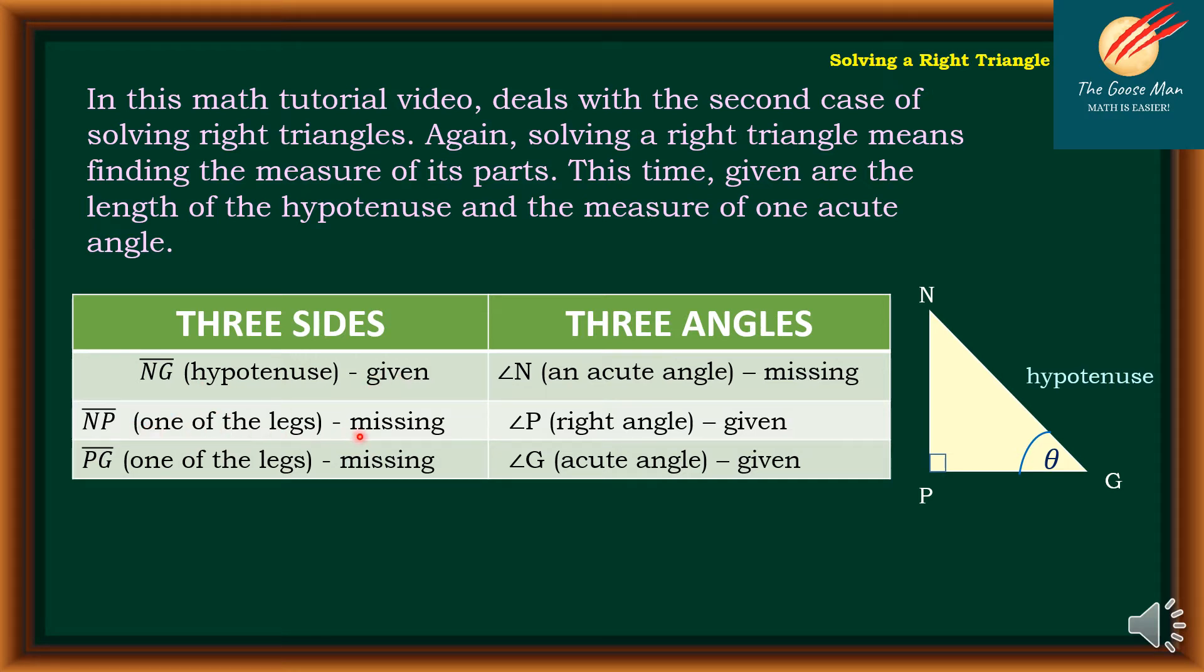However, NP is the missing side. PG, one of the legs, is missing. On the angles, we have angle N, an acute angle which is unknown or missing. Angle P is the right angle which is given, and finally, angle G is an acute angle that is given also.